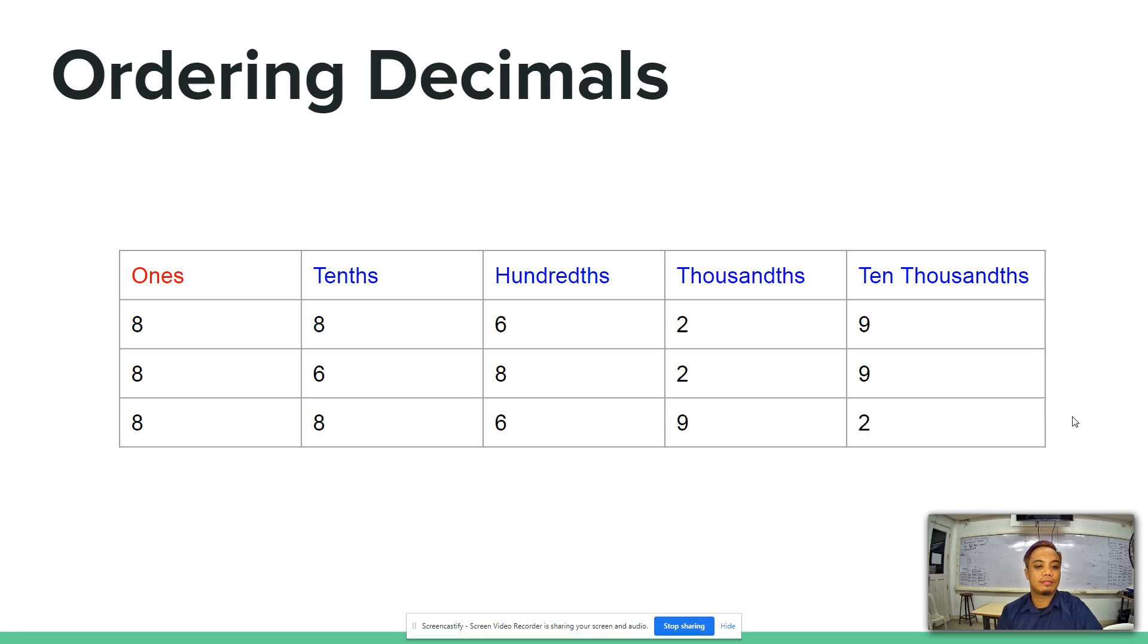Let's put them on the table again. As you can see, on 1's place, we have the same digit. Therefore, they have the same value. On 10's place, we have here 6, which is obviously smaller than 8. Therefore, we can say that 8.6829 is the number with the smallest value.